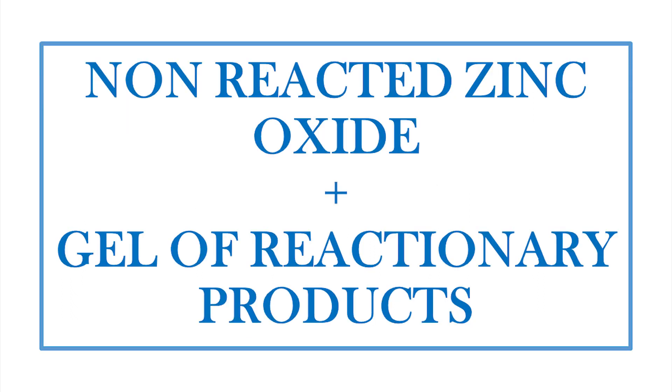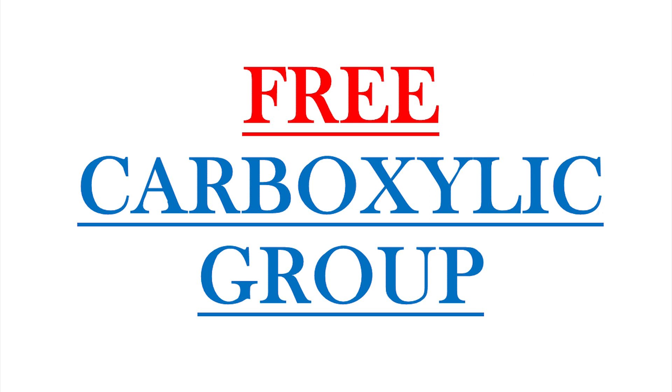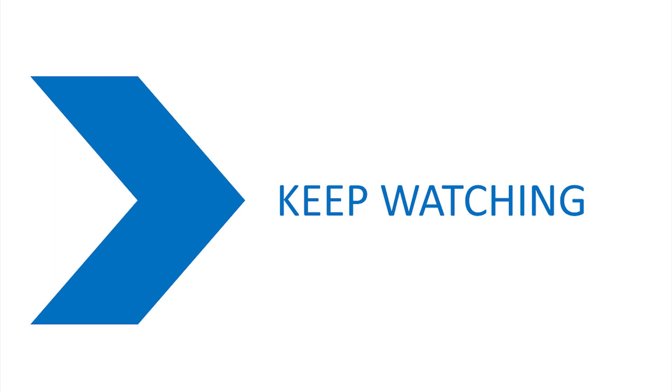At this point, look at the picture once again and you will realize that not all carboxylic groups are involved in the reaction, and you still have some amount of free carboxylic groups remaining. Keep watching this video and we'll know what is the importance of these free carboxylic groups in the properties of the cement.